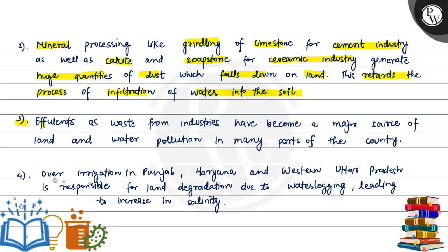The third point is effluence and waste from industries, which have become a major source of land and water pollution in many parts of the country. Whatever waste is left from industries is a very big reason for land and water pollution, especially in urban centers.